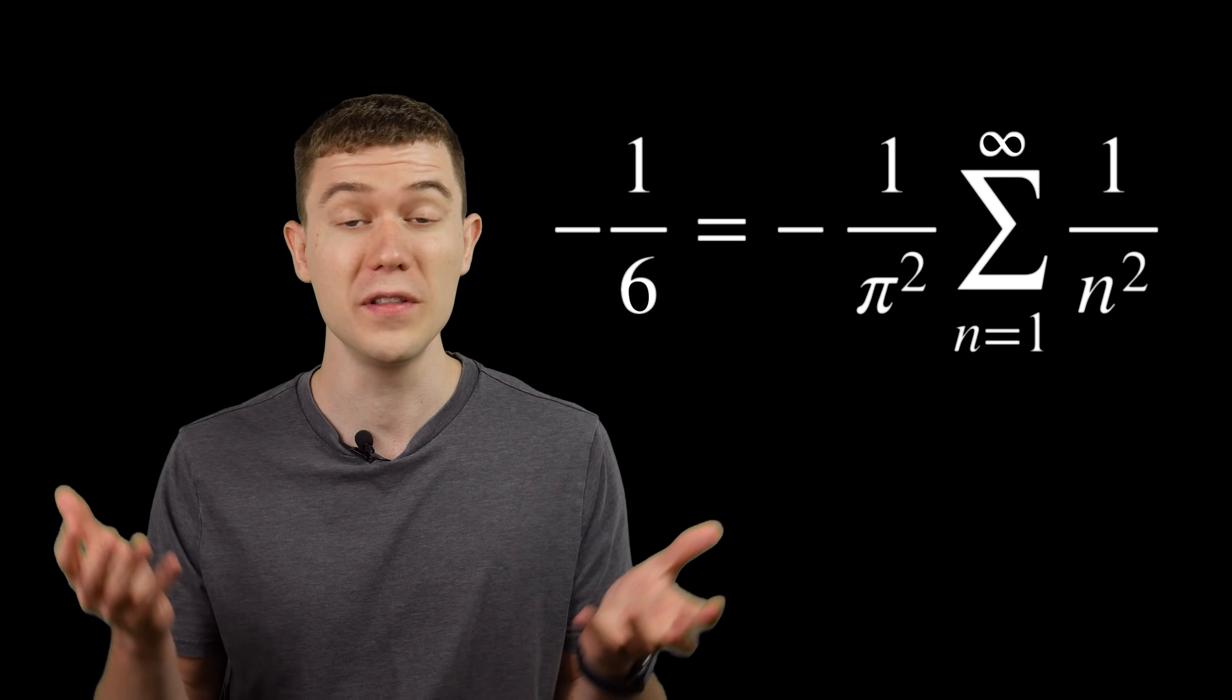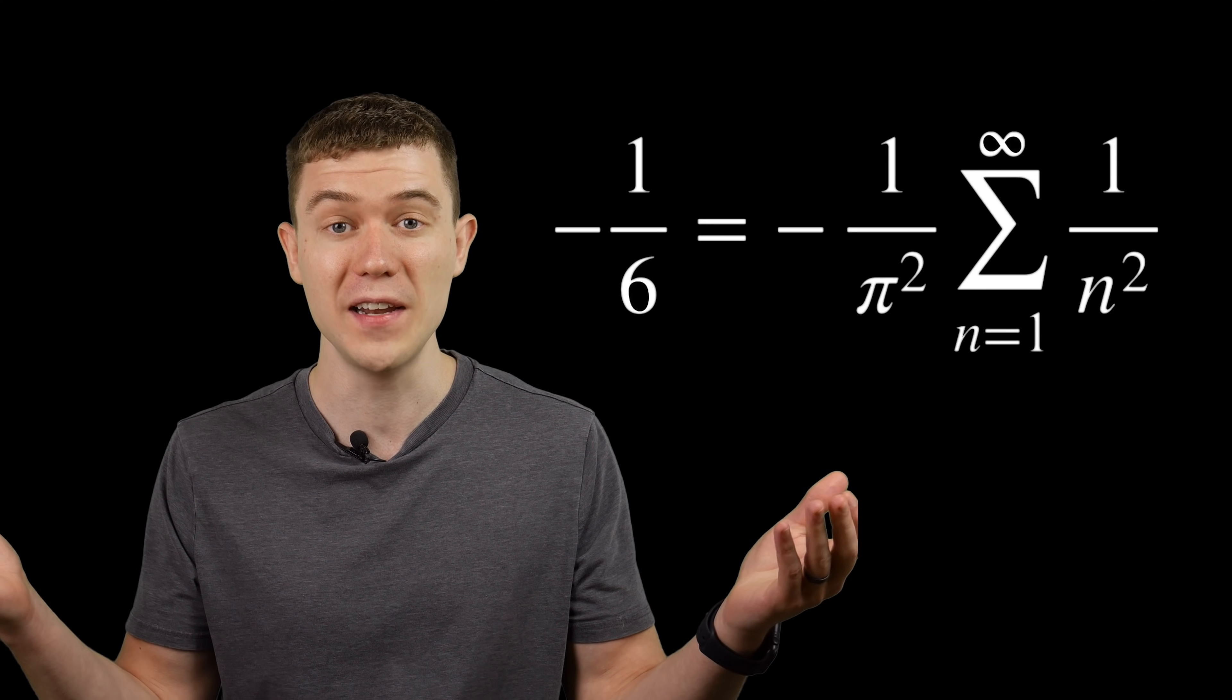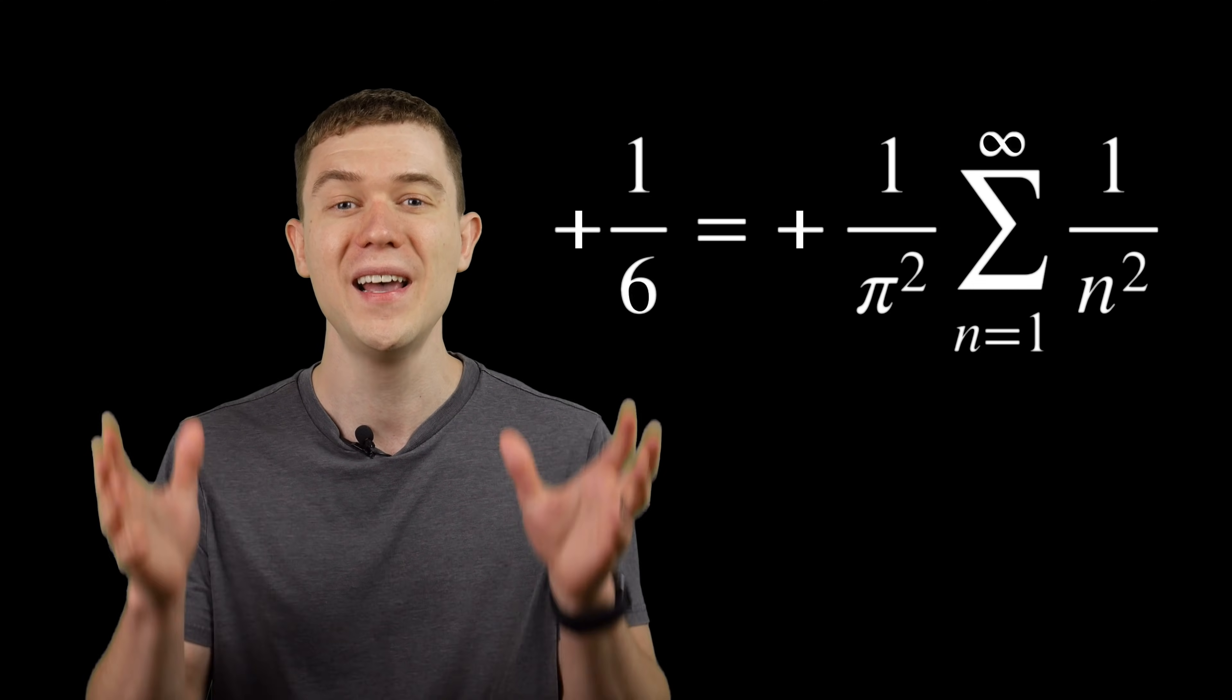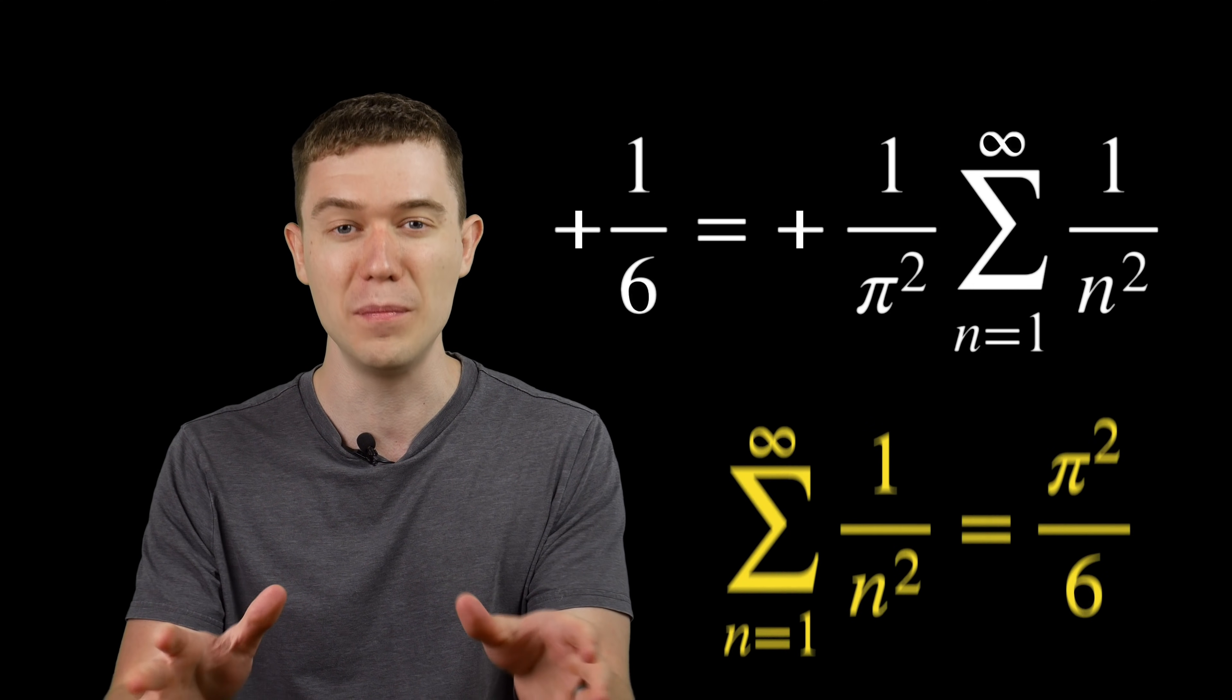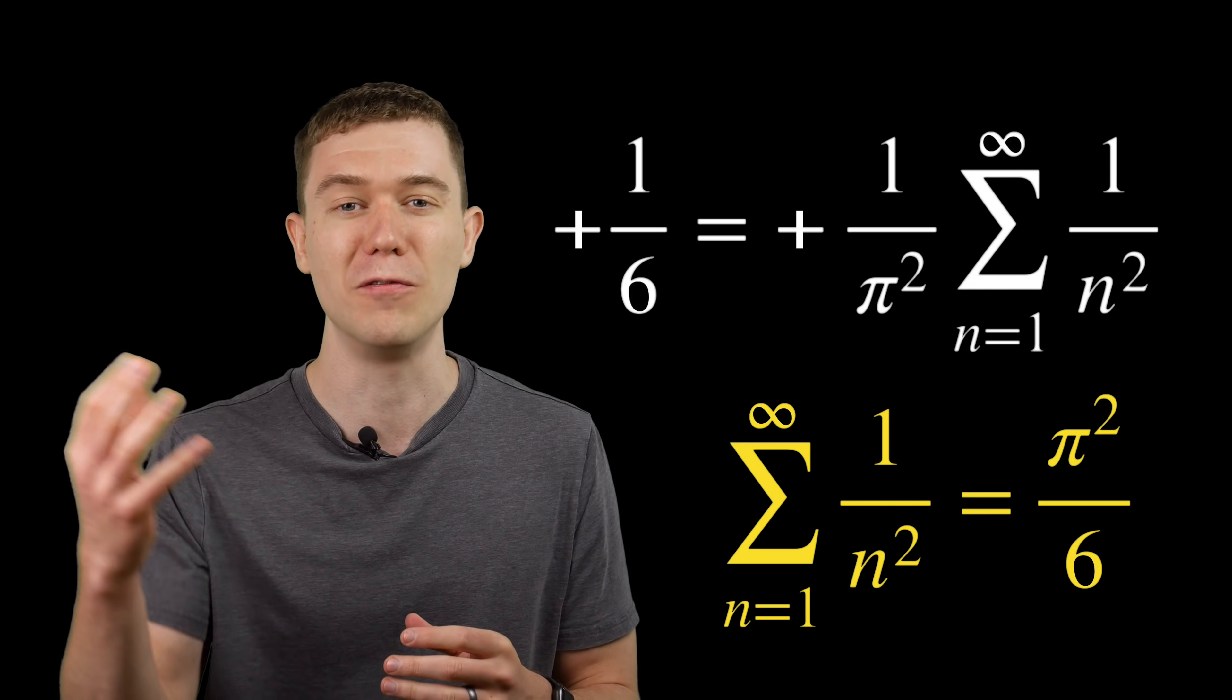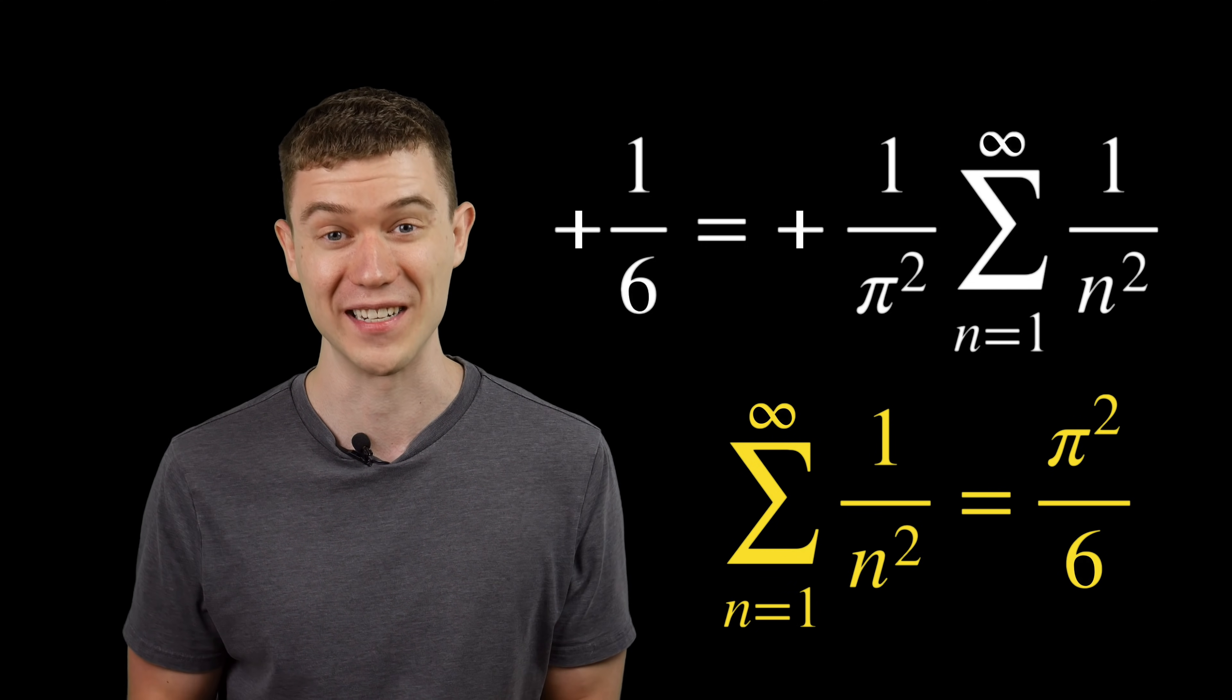1 over 3 factorial, that's 1 over 6. Cancel the negative on both sides and multiply by pi squared. And there we have the sum from n equals 1 to infinity of 1 over n squared as pi squared over 6.